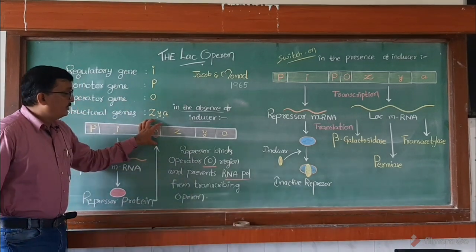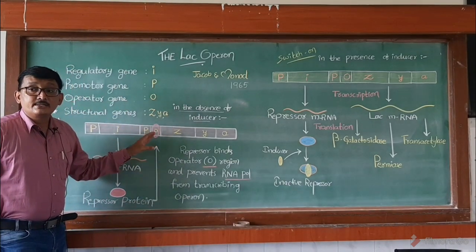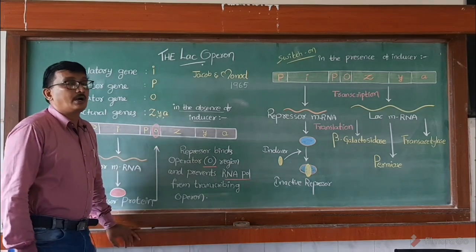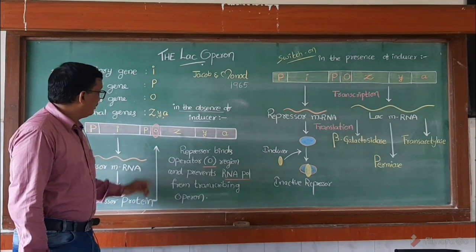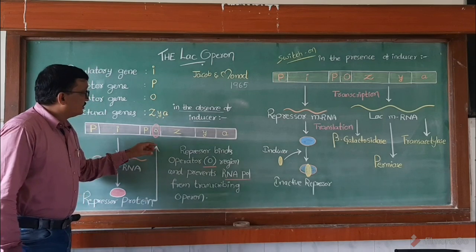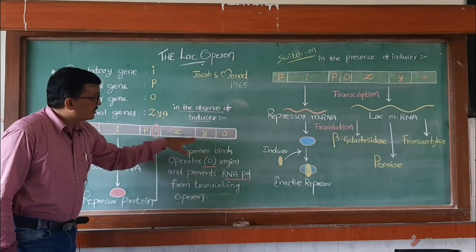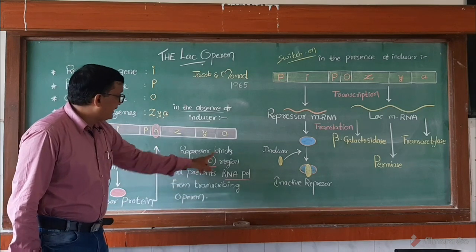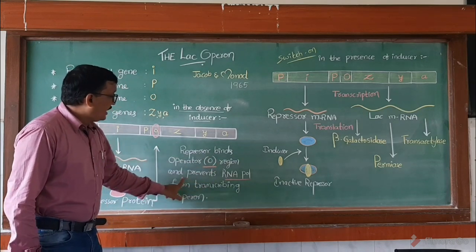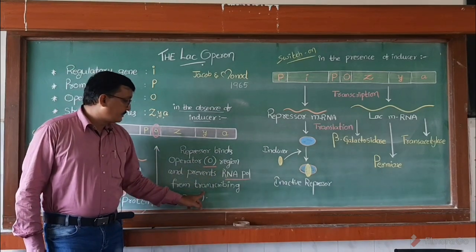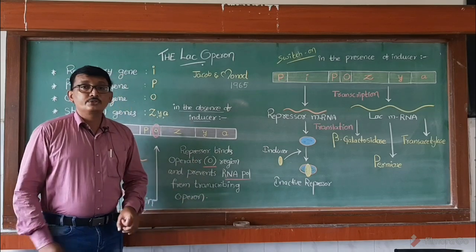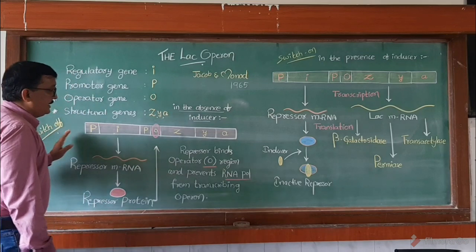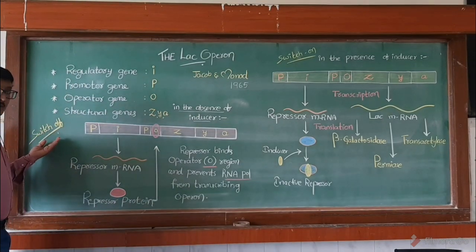When the operator gene is blocked, it prevents the passage of RNA polymerase enzyme, so there is no expression of Z, Y, and A genes. The repressor binds the operator region and prevents RNA polymerase from transcribing the operon — there is no transcription and translation. This condition is called the switch off condition.